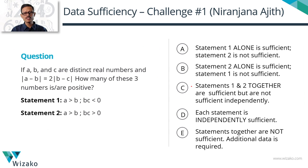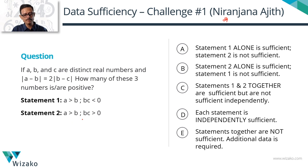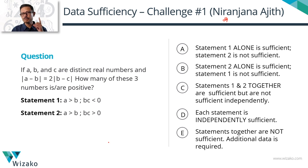Moving to the second set of statements, presented by Niranjana Ajith. Statement 1: A is greater than B, and BC is less than zero. Statement 2: A is greater than B, and BC is greater than zero. She's cleverly swapped the sign of the BC product between the two statements. Pause the video, evaluate both statements, and determine whether the answer is A or B.